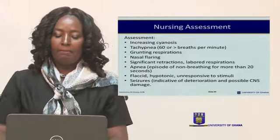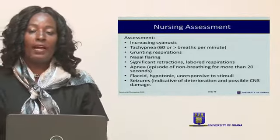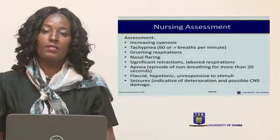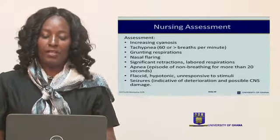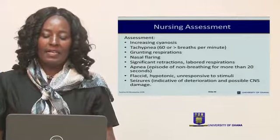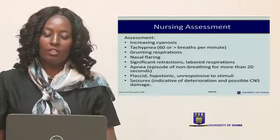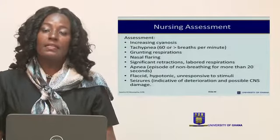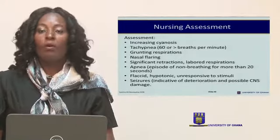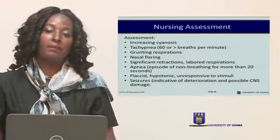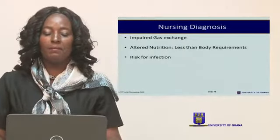In cases where breaths are 60 or more per minute, this causes tachypnea. Auscultation is the best way to assess rather than just counting. Assess and document grunting respirations, nasal flaring, significant retraction, and labored respirations. If the baby is flaccid, hypotonic, or unresponsive to stimuli, document and report for appropriate intervention. Seizures may indicate possible deterioration or central nervous system damage, which is sometimes irreversible, so the family needs to be informed.